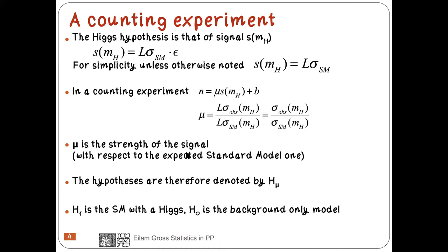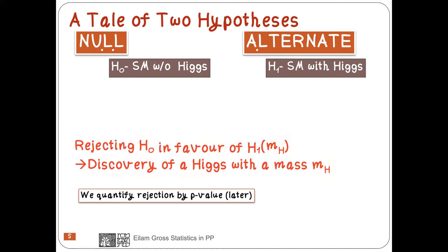I denoted the hypothesis by H_mu, where H_1 is the standard model Higgs and H_0 is the background-only hypothesis. There is a null hypothesis and there is an alternative hypothesis. Our job in statistical physics is to try to reject the null hypothesis in favor of the alternative. For example, if H_0 is the background-only hypothesis, I try to reject it in favor of a hypothesis with a Higgs, which we call H_1 at some mass M_H.